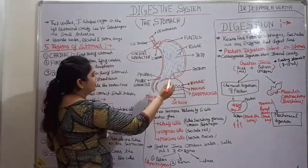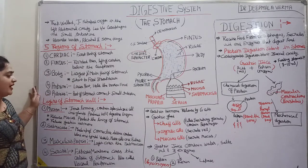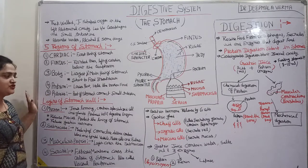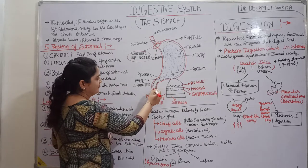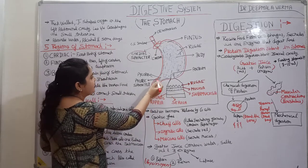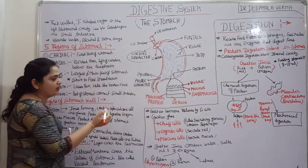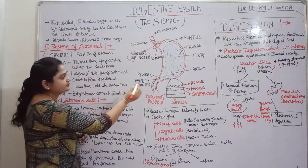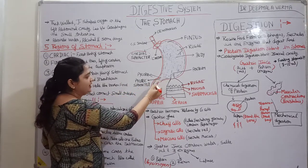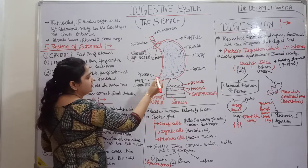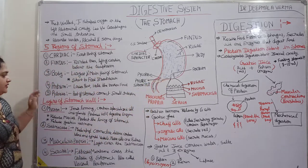Pylorus is the part of the stomach that connects to the small intestine, the duodenum. In this part, the pyloric sphincter is present. The pyloric sphincter is a thick ball of muscles. It prevents the backward movement of food.